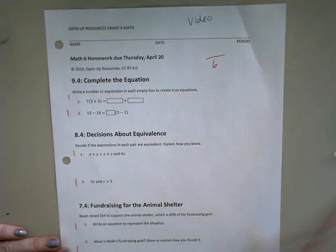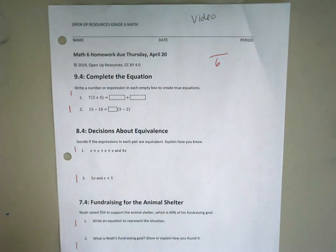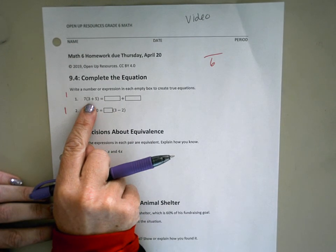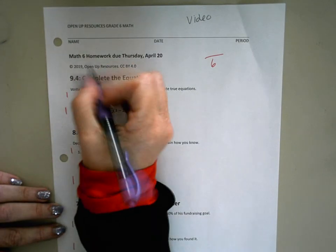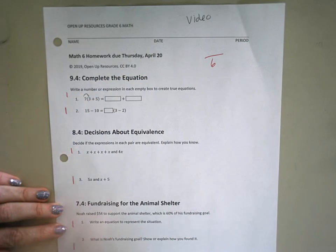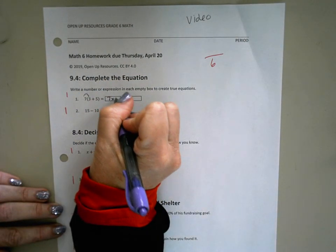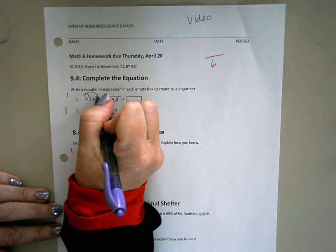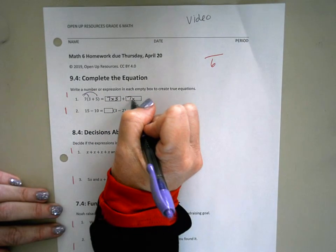Distributive property is when we're going to be looking at ways to make multiplication easier. So distributive property says if I have 7 being multiplied by the sum of 3 plus 5, that's the same thing as multiplying 7 times 3 and then adding, so there's the addition symbol, 7 times 5.